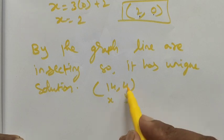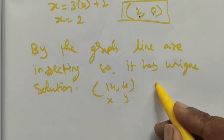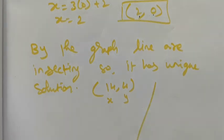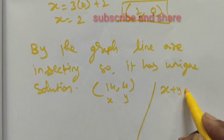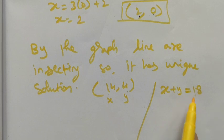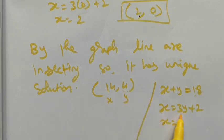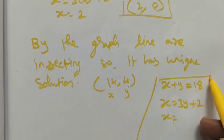Verification: Substituting x = 14 and y = 4 into equation 1: x + y = 14 + 4 = 18. Correct. Substituting into equation 2: x = 3y + 2 → 3(4) + 2 = 12 + 2 = 14. Correct. Hence both equations are satisfied.